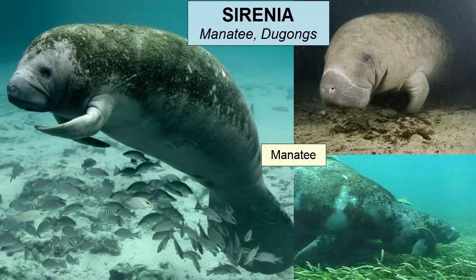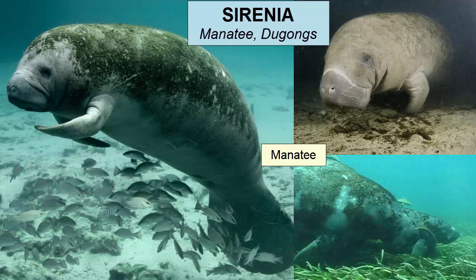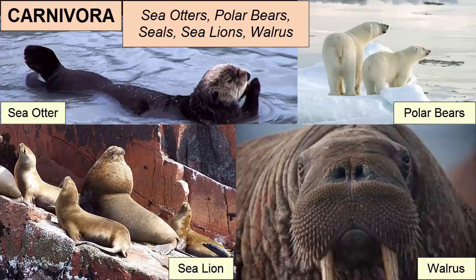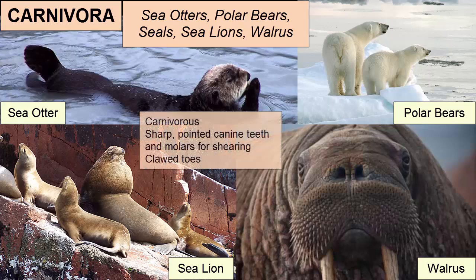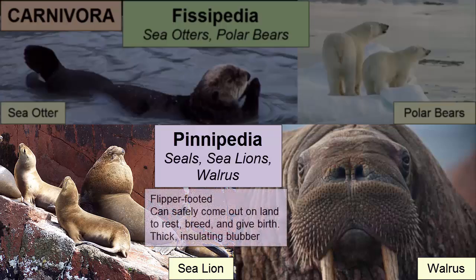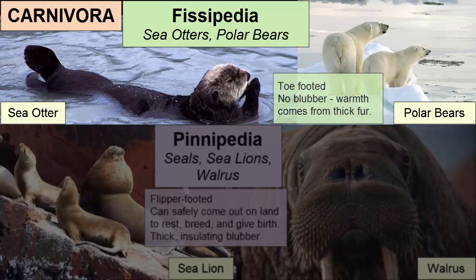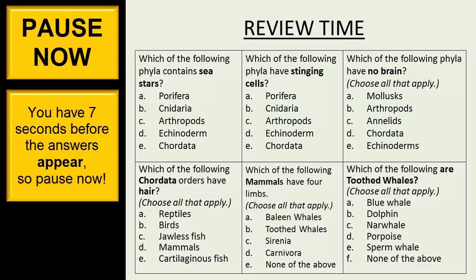Order Sirenia, or sea cows, consists of grass-eating mammals that live in mangrove swamps and possess fin-like forelimbs with no hind limbs. They consist of manatees and dugongs. Order Carnivora consists of carnivorous mammals with sharp pointed canine teeth, molars for shearing, and clawed toes. Suborder Pinnipedia consists of flipper-footed carnivores that can safely come out on land to rest, breed, and give birth; they have thick insulating blubber and include seals, sea lions, and walruses. Suborder Fissipedia consists of toe-footed carnivores with no blubber; warmth comes from thick fur, and they include sea otters and polar bears.